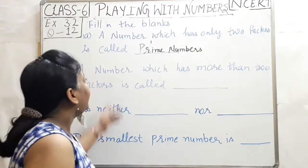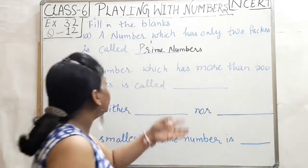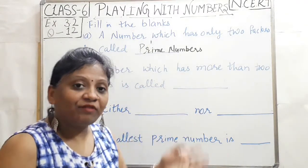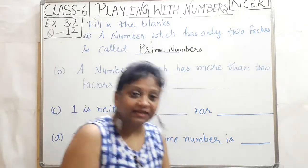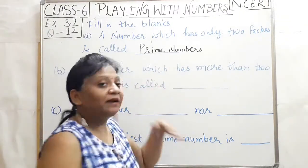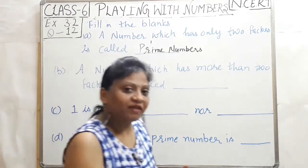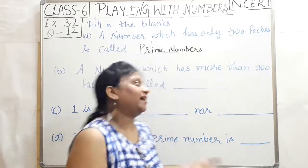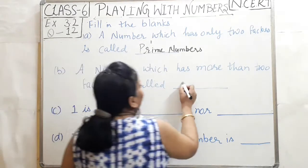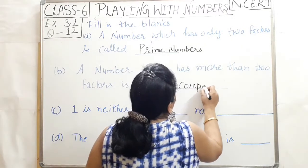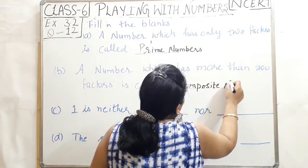Next, a number which has more than two factors is called. Those are the numbers which have more than two factors. What are they? Composite numbers.